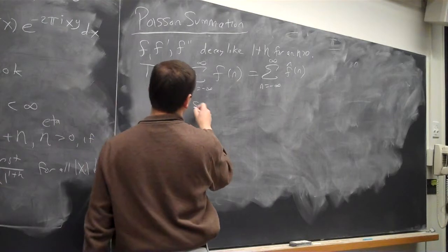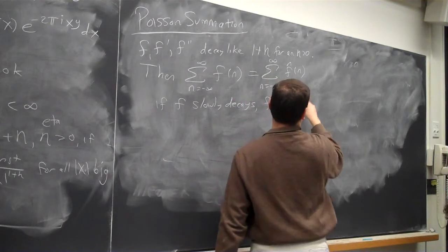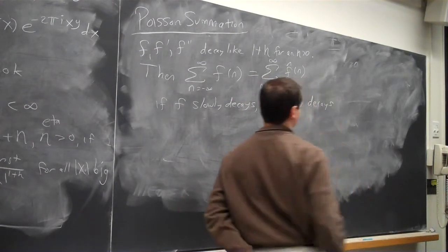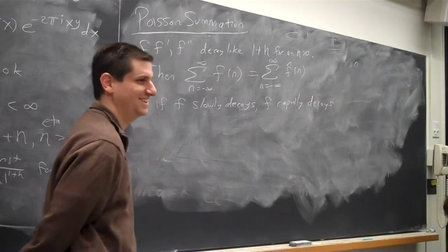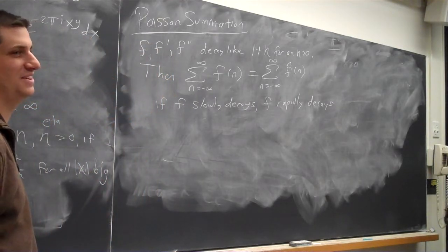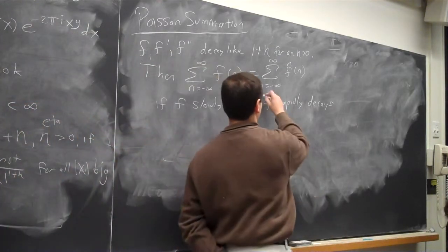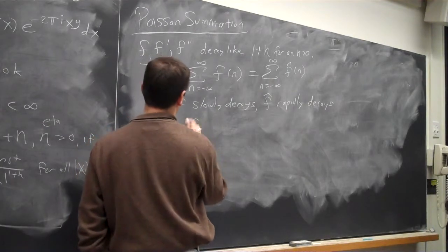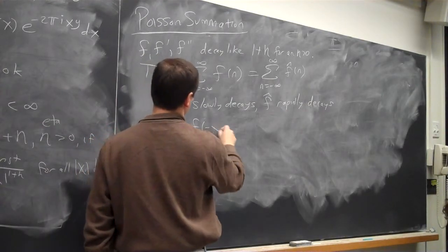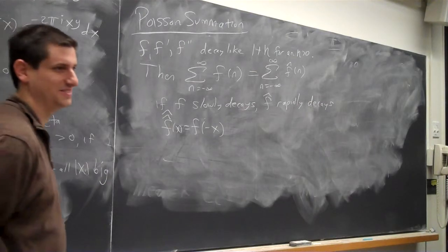Typically, if F slowly decays, F hat rapidly decays. All right. So obviously, there's a typo here. What is the typo? That F hat. A hat? Yes. Where does the hat go? It doesn't actually matter. It turns out, F hat hat of X is F of negative X, if you do the calculation. So if F is even, F hat hat is F hat, which is F. If you take the Fourier transform twice, you return to where you start, except X is replaced with negative X. If you do it four times, you return to where you start. It sounds like a group.